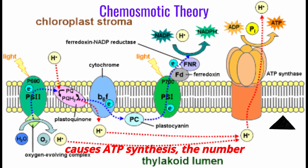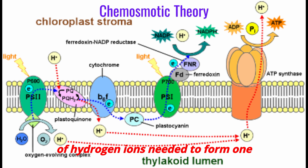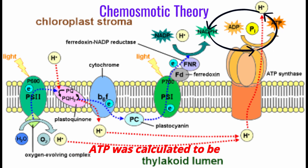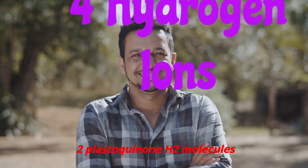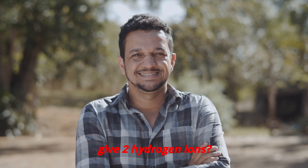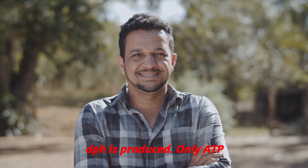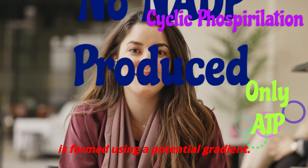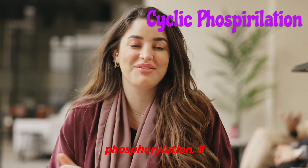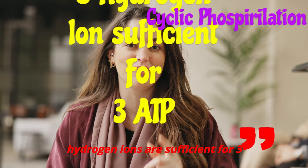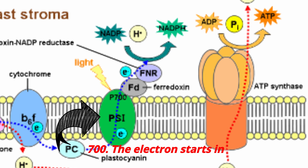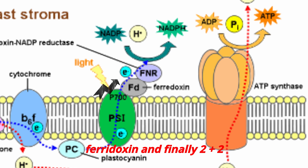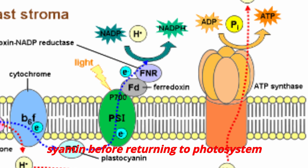The exact mechanism by which a downhill transport of H⁺ ions causes ATP synthesis is not fully known. The number of hydrogen ions needed to form one ATP was calculated to be three. Splitting two water molecules produces four H⁺ ions; two plastoquinone-H molecules contribute two hydrogen ions. In this pathway, no NADPH is produced — only ATP is formed using the potential gradient. This is called cyclic phosphorylation. Eight hydrogen ions are sufficient for three ATP in photosynthesis. Additional ATP is formed by the cyclic pathway involving P700, where the electron starts in photosystem 1, passes to ferredoxin, then to plastocyanin, before returning to photosystem 1.